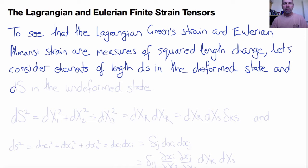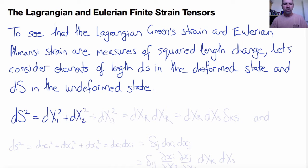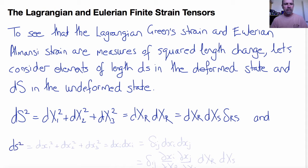We'll consider elements of length dS in the deformed state and ds in the undeformed state. Taking dS first, by Pythagoras, dS² = dX₁² + dX₂² + dX₃², or in vector notation dX·dX, or in index notation dXr dXr, which we could also write as dXr dXs times δrs. Similarly, ds² = dx₁² + dx₂² + dx₃², which equals δij dxi dxj.